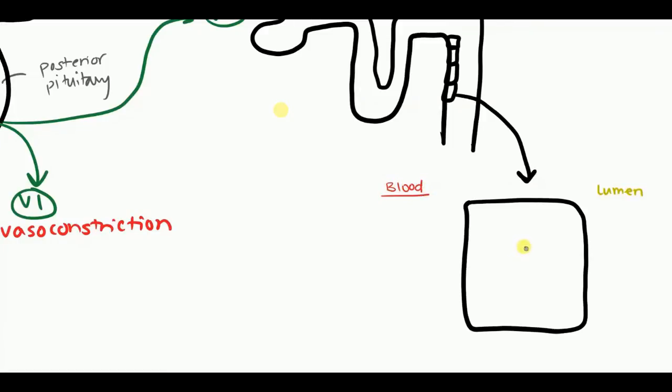Now within this principal cell, there are these vesicles. Lining the vesicles are going to be these little channels called the aquaporin 2 channels. These little green dots represent the channel. When ADH is present in the blood, it goes into the principal cell and activates this vesicle to go out towards the membrane and it fuses with the membrane.